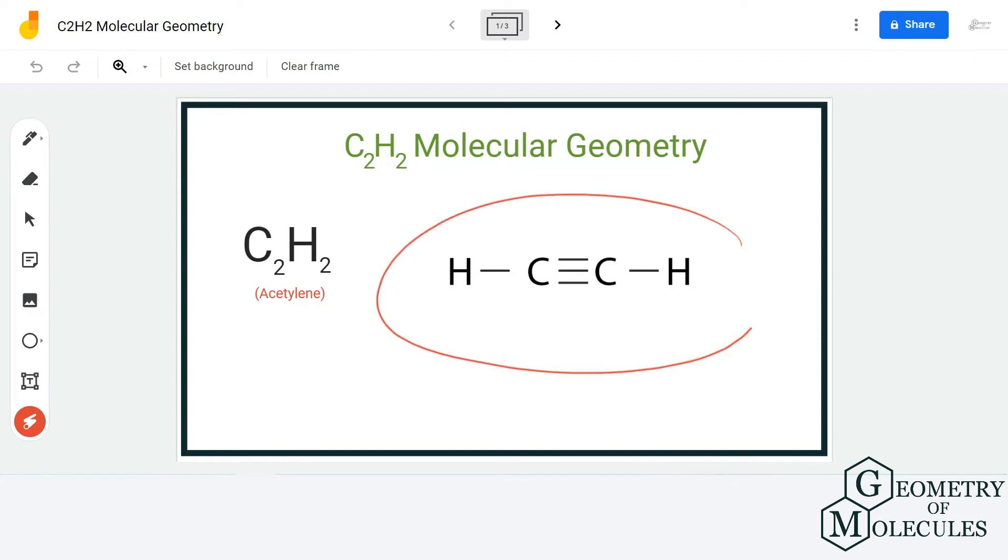Here is the Lewis structure of ethane in which we have two carbon atoms forming a triple bond with each other and a single bond with hydrogen atoms. The structure is quite simple, and if you look at its shape in 3D, you can see that all the atoms are arranged in a single plane.